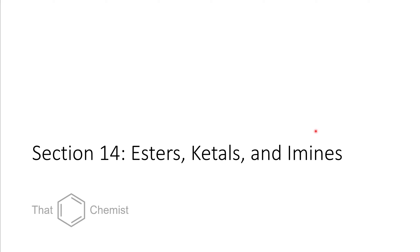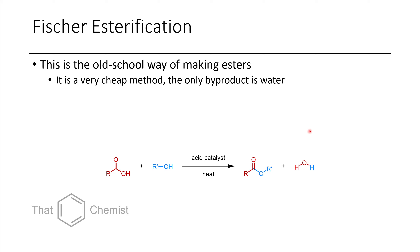With that, let's get to the material at hand today: esters, ketals, and imines. Last time we talked about how certain carbocations could be stabilized due to the presence of an adjacent heteroatom. The first reaction we're going to talk about today is Fischer esterification. In Fischer esterification, you take a carboxylic acid and an alcohol, and in the presence of an acid or a Lewis acid catalyst, you're afforded with an ester as well as water. The nice thing about this method is it's really cheap — the only byproduct is water, and you don't have to use very high catalyst loadings.